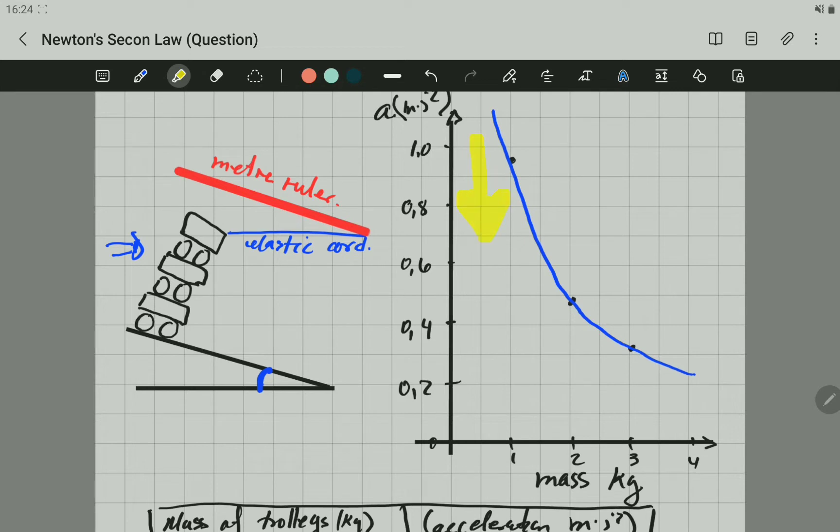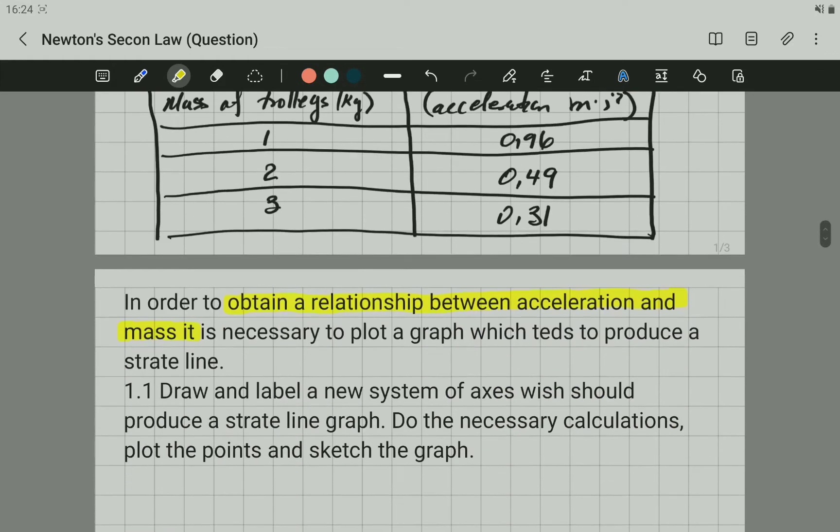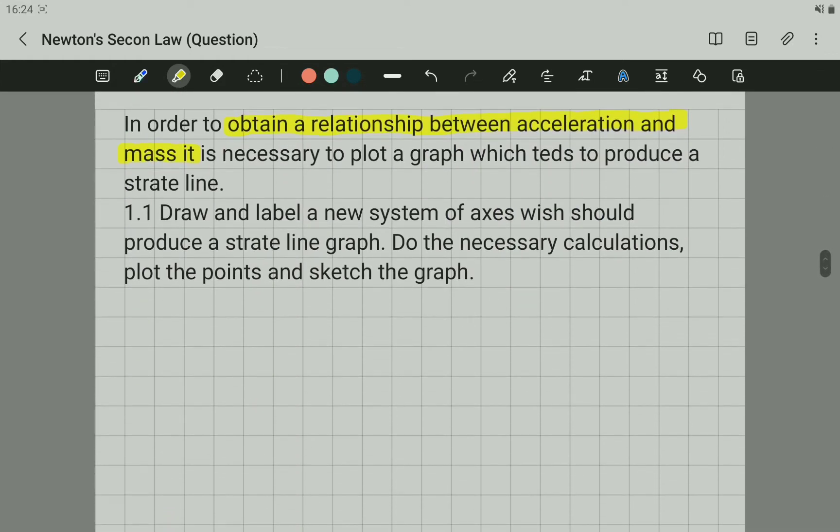And you can see that as the acceleration is going down, the mass increases or the other way around. As the mass increases, the acceleration decreases. So the relationship is inverse. How can we fix that? Well, it's simple. We find out the relationship between acceleration and the inverse of the mass.